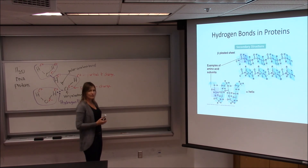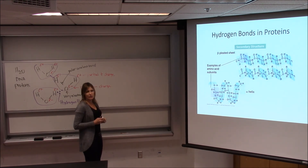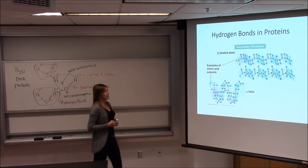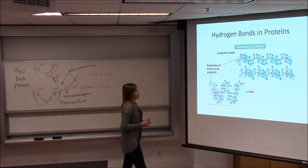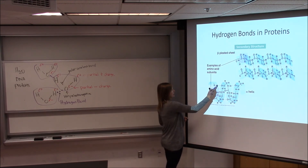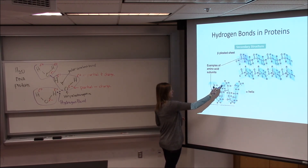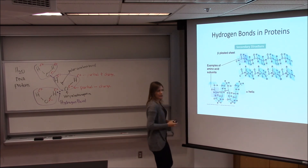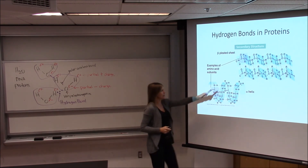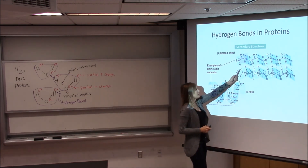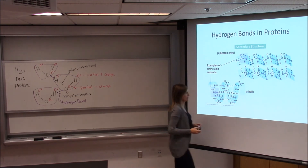Proteins. What we call the secondary structure of proteins — you'll learn what this means in a later unit — is the result of hydrogen bonds. You can see the hydrogen of one part of the molecule attracted to the oxygen of another part, and the three dots indicate those are all hydrogen bonds.